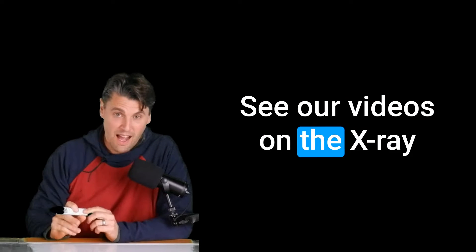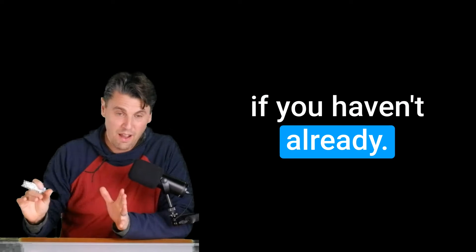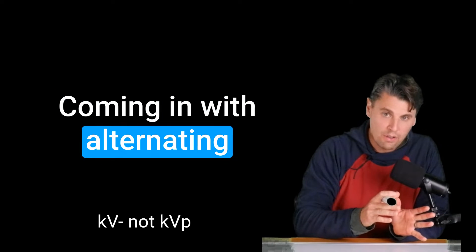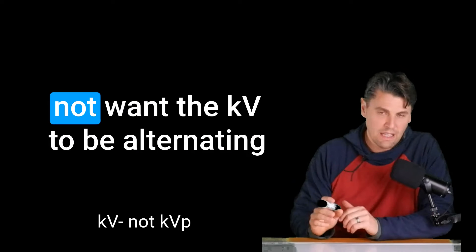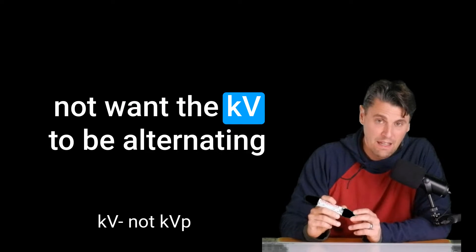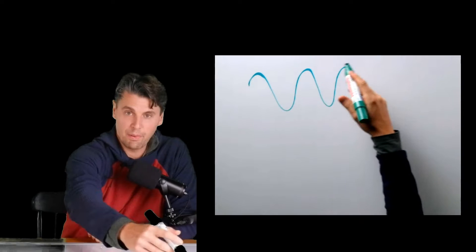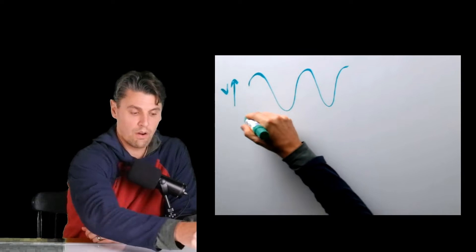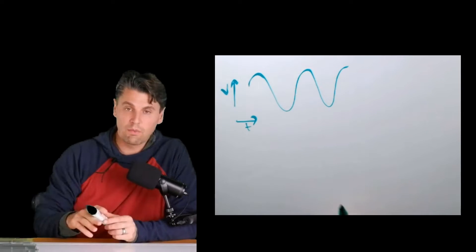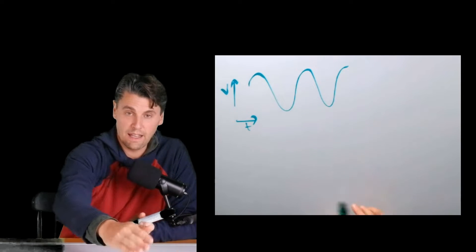See our videos on the x-ray circuit and on transformers if you haven't already. Coming in with alternating current, we would actually not want the KVP to be alternating up and down the voltage. It's going up and down and up and down. This is our voltage over time. This is what we call an alternating current.